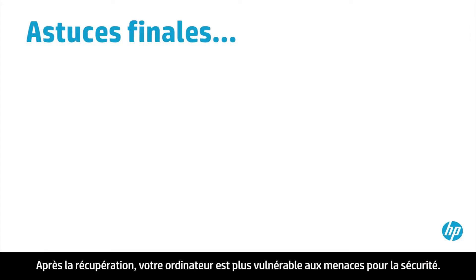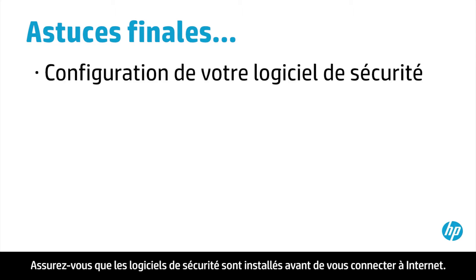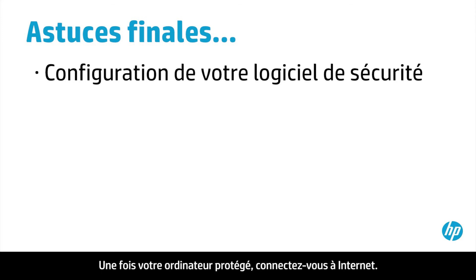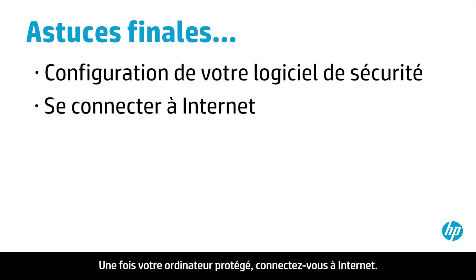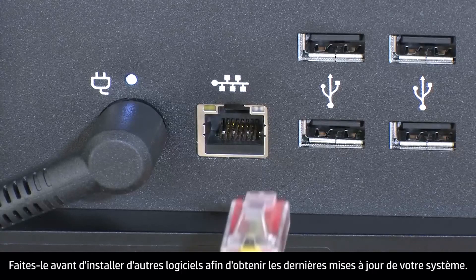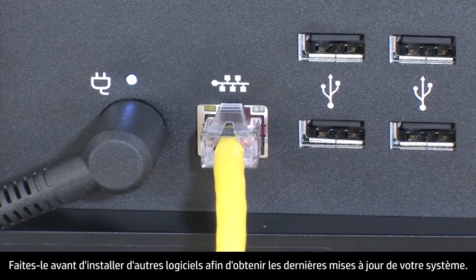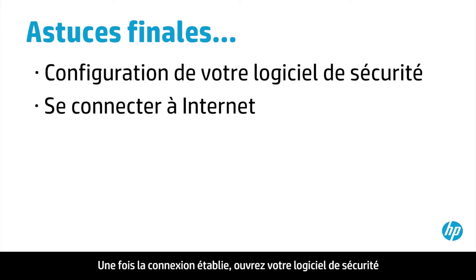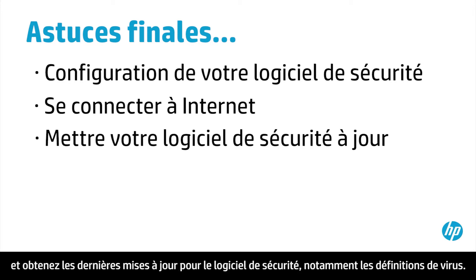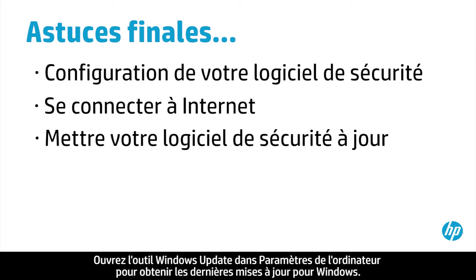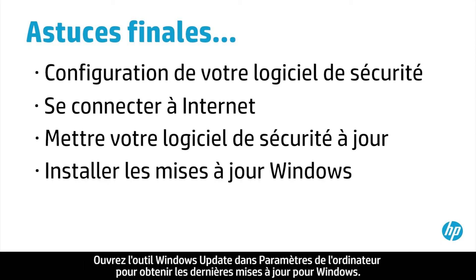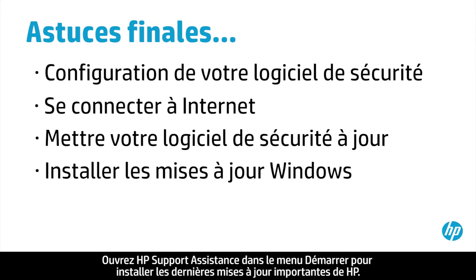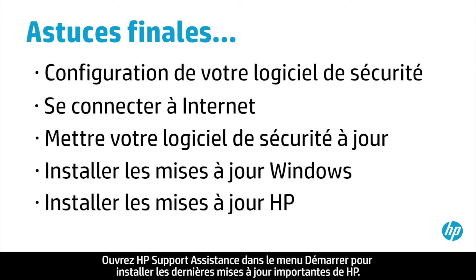After recovery, your computer is more vulnerable to security threats. Make sure you have security software installed before connecting to the Internet. Once your computer is secure, connect to the Internet. Do this before installing other software in order to get the latest updates to your system. After connecting, open your security software and get the latest updates, especially updates to virus definitions. Open the Windows Update tool in PC settings to get the latest updates for Windows. Open HP Support Assistant on the Start screen to install the latest important updates from HP.